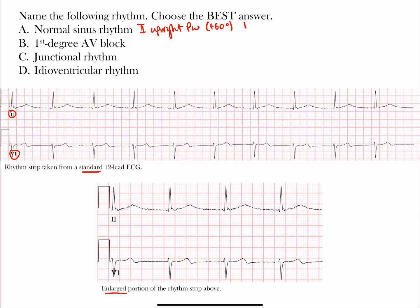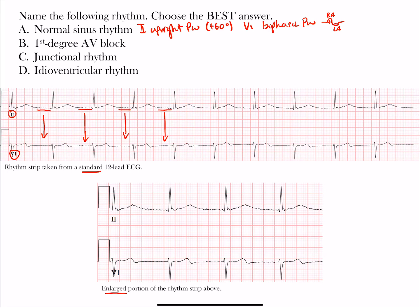These biphasic P waves have a positive then negative deflection — positive representing right atrial depolarization and negative representing left atrial depolarization. However, notice that there are in fact no P waves present throughout this strip. You might think you see a P wave somewhere, but look carefully — there are clearly no P waves. That could be artifact. Since sinus rhythm requires P waves, choice A is not correct.